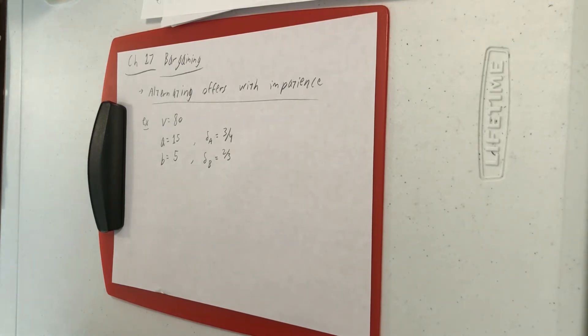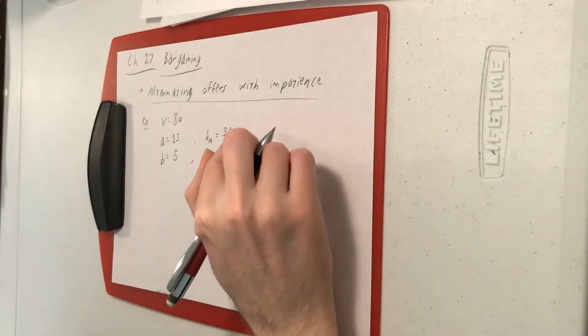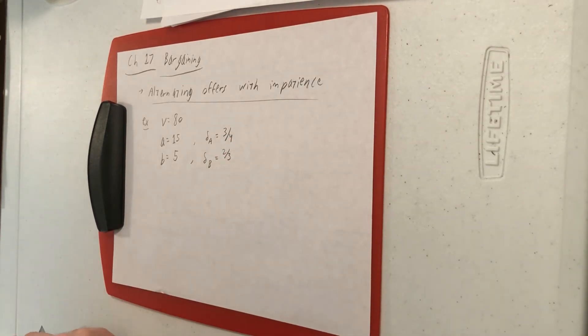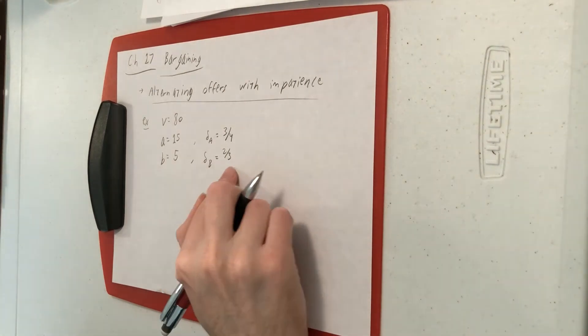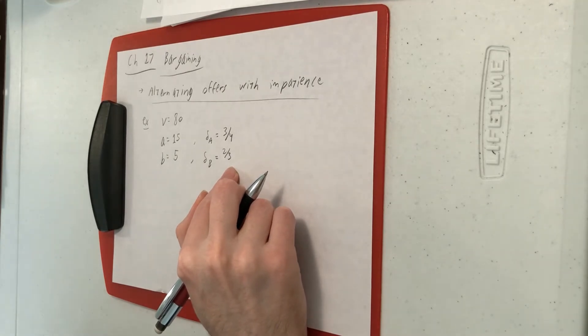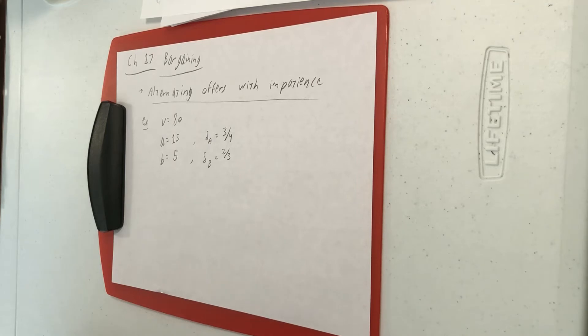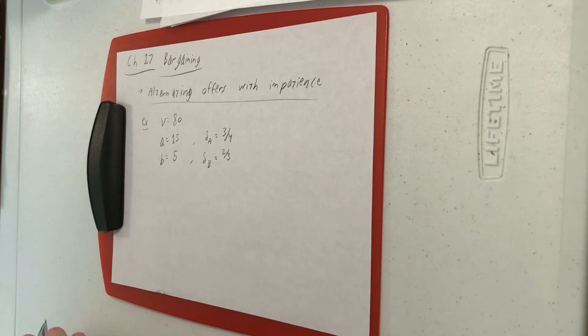One other thing to notice here is that you can see right away, person A is going into this game with a bit of an advantage. First of all, person A is less impatient than person B. When their Delta is 3 quarters, that means that each round the deal is not reached, the total value to A only goes down by one quarter, only goes down by 25%. Person B's Delta is 2 thirds. That means that each round that has no deal is going to cause the surplus in B's eyes to fall by one third, by 33%. Because B discounts the future more heavily, because B is more impatient, B is going to be more impatient to reach a deal. A can take advantage of that. So, the deck is kind of stacked in A's favor. Let's verify it numerically by working through the problem.